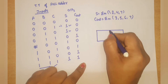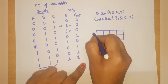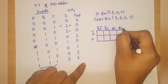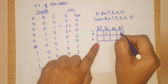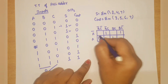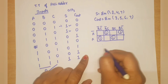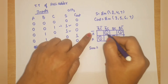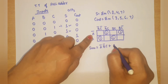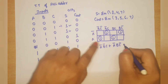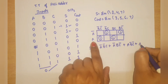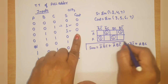This K-map is for Sum. A three-variable K-map is required. On one axis: A-bar, A; on the other axis: B-bar·C-bar, B-bar·C, B·C, B·C-bar. Plotting minterms 1, 2, 4, and 7 — there is no pair, no quad possible. So we take individual minterms. The expression for Sum becomes: Sum = A-bar·B-bar·C + A-bar·B·C-bar + A·B-bar·C-bar + A·B·C.